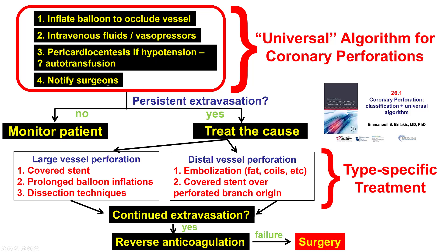Sometimes notifying the surgeons is appropriate, although emergent bypass surgery is very infrequent in patients with previous bypass. If there is persistent extravasation of blood through the exit point, the cause is treated. When it comes to large vessel perforation — which was the type of perforation in our case — the most common treatment is with a covered stent. If there is continued extravasation, equipment is removed, followed by anticoagulation reversal, and very rarely patients may need to go to urgent cardiac surgery.